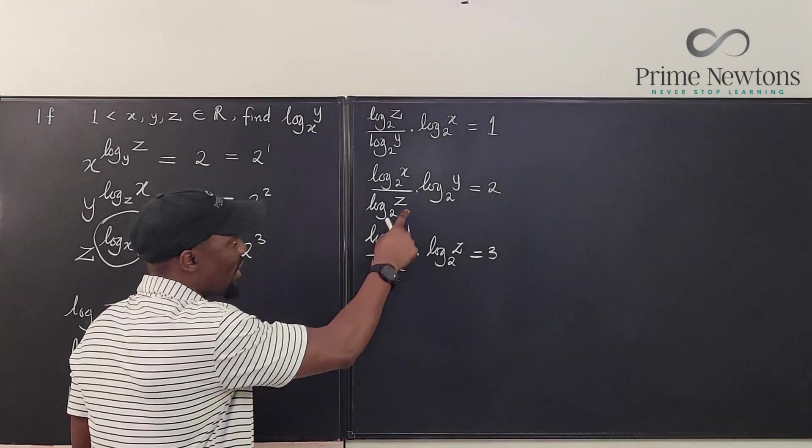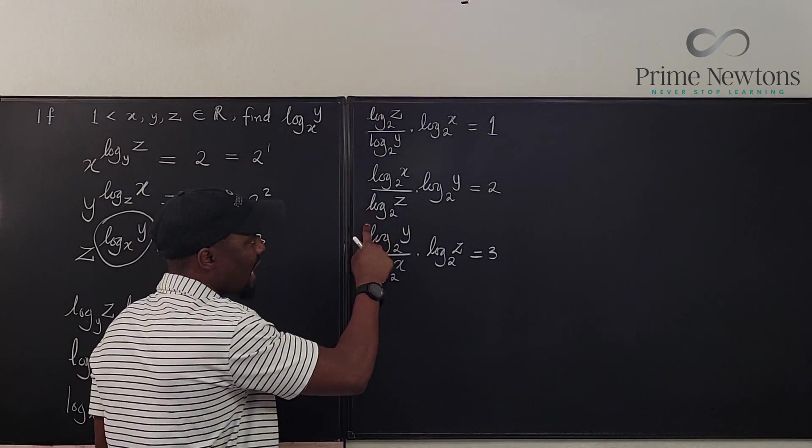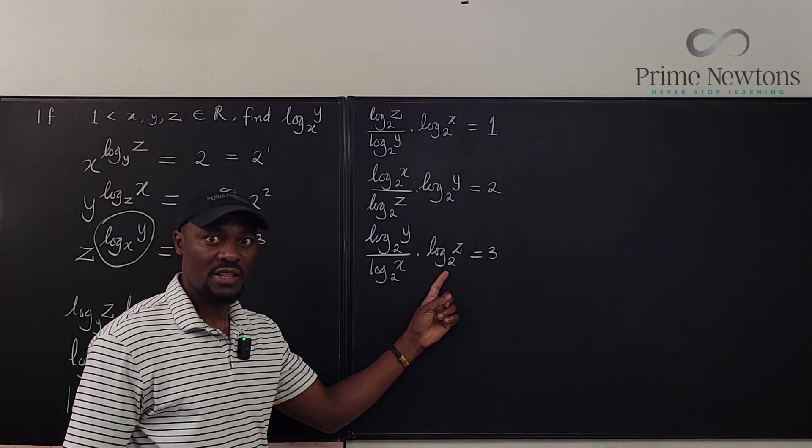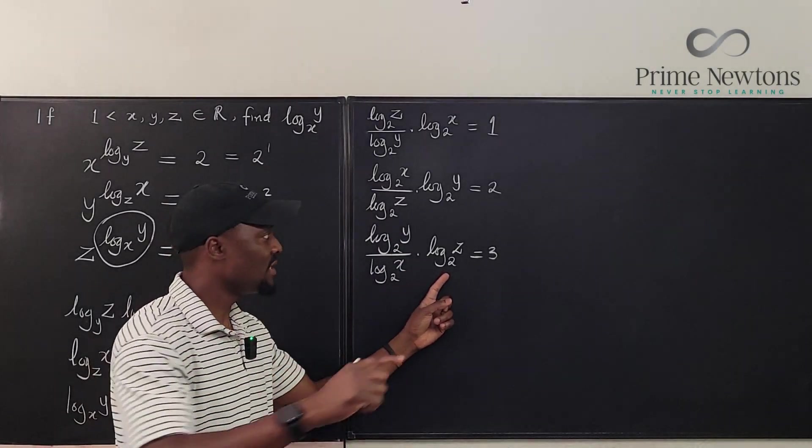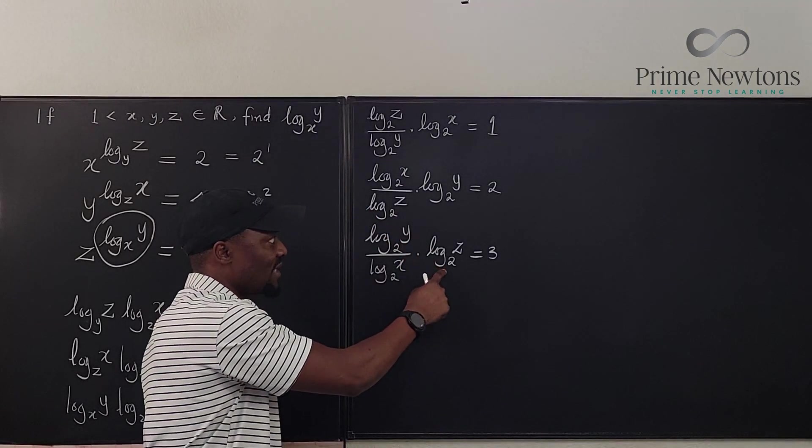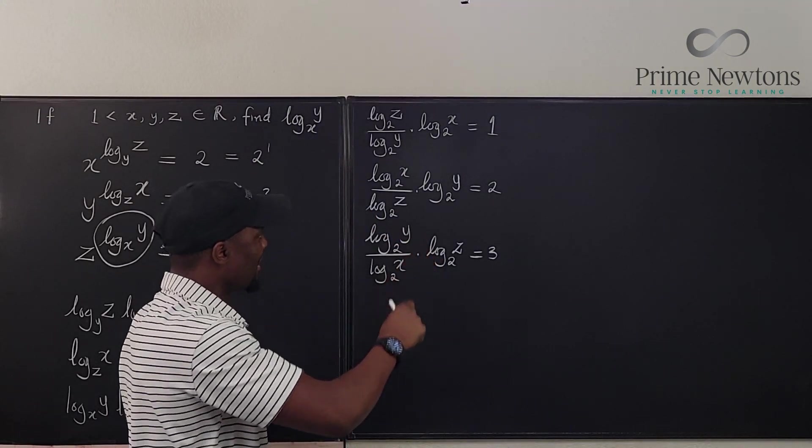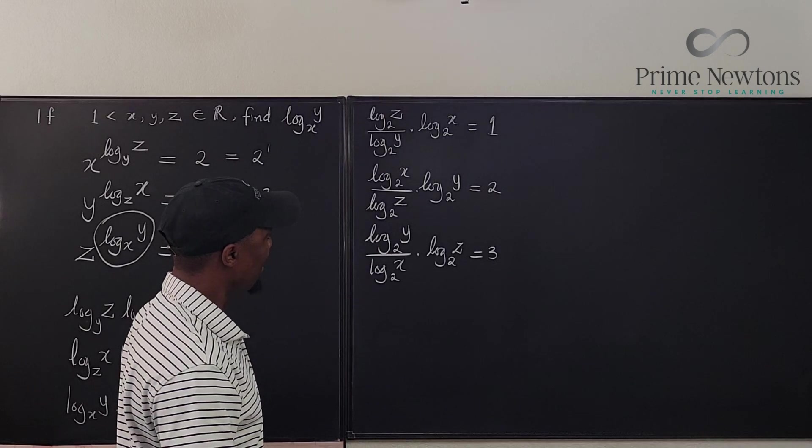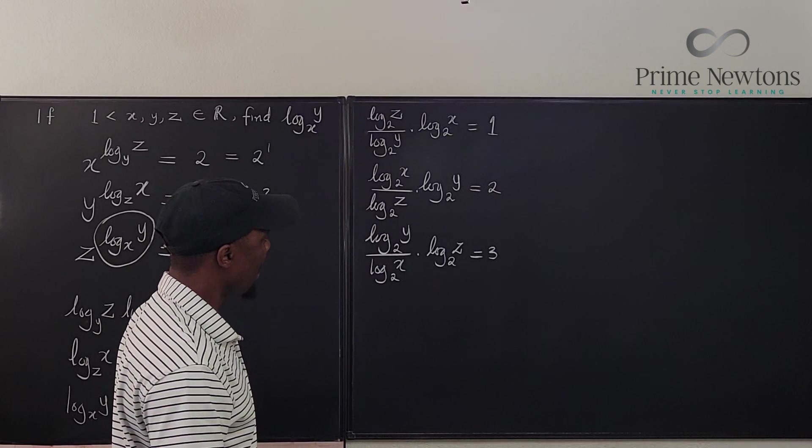Look, you have log z in the denominator here, and you've got log z not in the denominator here, which means if you multiply this by this, this guy is going to cancel this. And yeah, that's the only cancellation we're going to have.